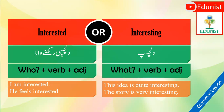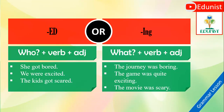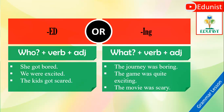Here I have a few more examples. We can say 'She got bored' — that is a person. 'The journey was boring' — that is a thing. 'We were excited' — persons. 'The game was quite exciting' — a thing. 'The kids got scared' — persons. 'The movie was scary' — a thing. So here is an exception: 'the movie was scary,' not 'scaring.'